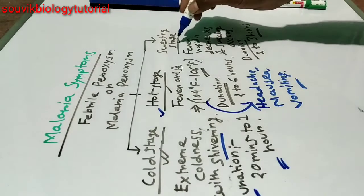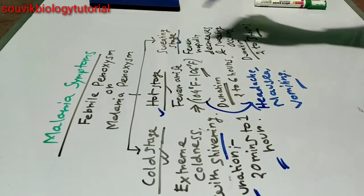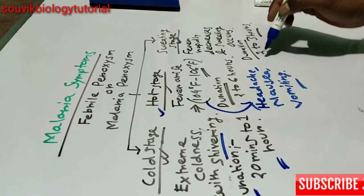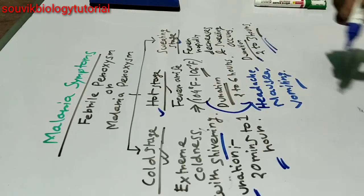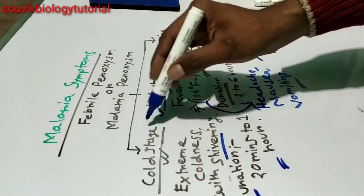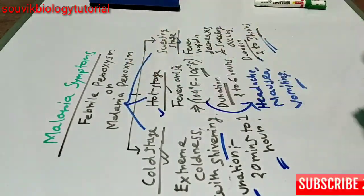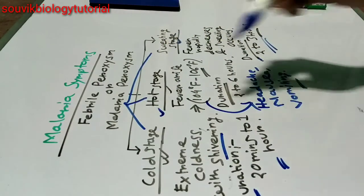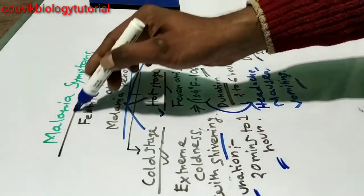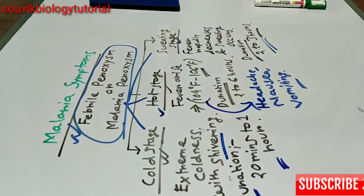The final stage is the sweating stage. Here, fever rapidly decreases and sweating occurs. The duration is 2 to 3 hours. These three stages are collectively known as malaria paroxysm, also known as febrile paroxysm, which is the most common symptom of malaria.